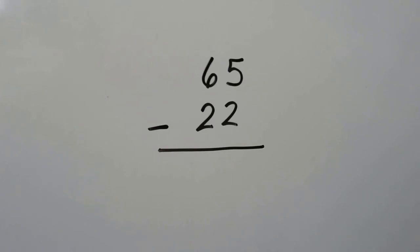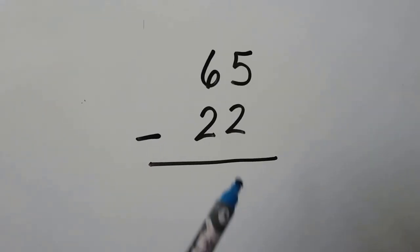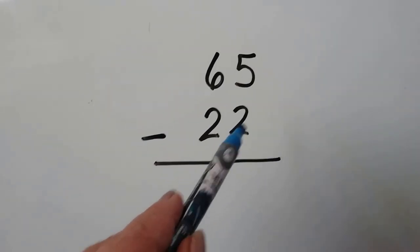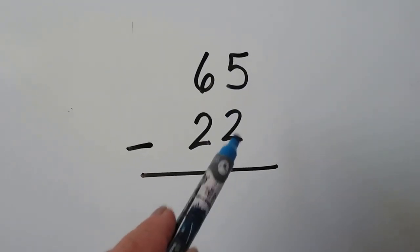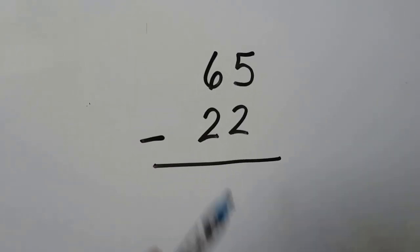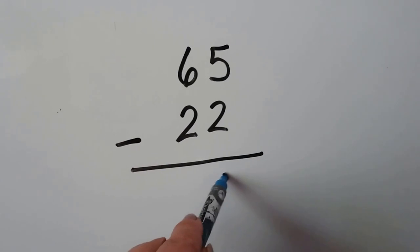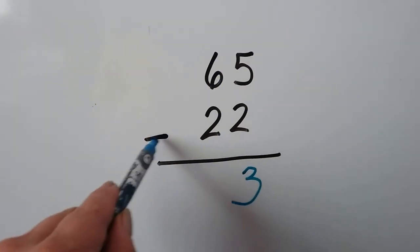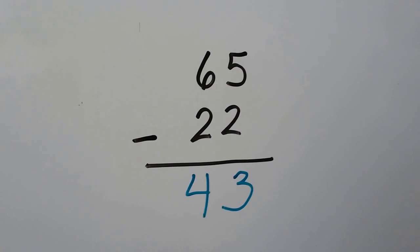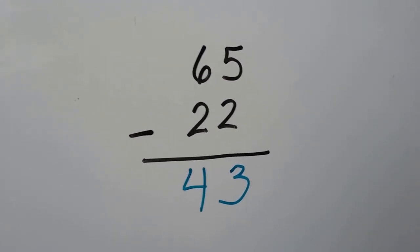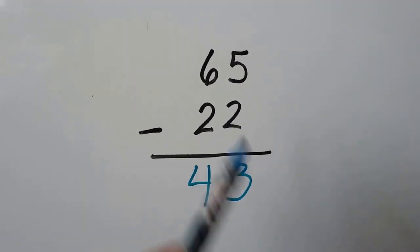Here we have 65 minus 22. The 2 is smaller than the 5, so we don't have to regroup. 5 minus 2 is 3. And 6 minus 2 is 4. Our difference is 43. We didn't have to regroup because the 2 was smaller than the 5.